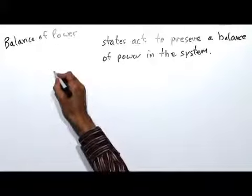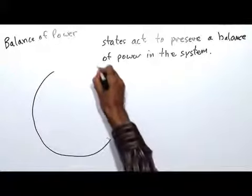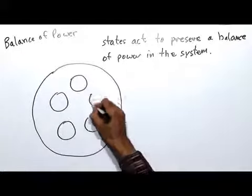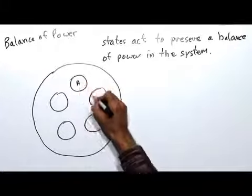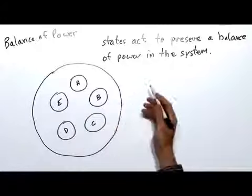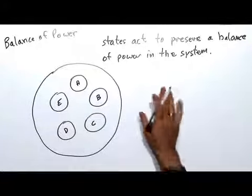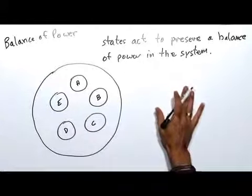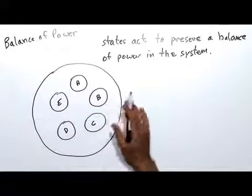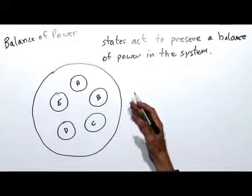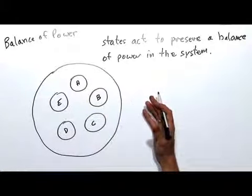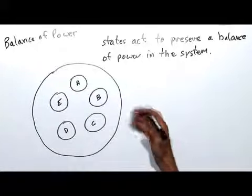What I'll do is draw an international system here, and I'm going to populate it with five states — A, B, C, D, and E — all roughly equivalent in power, hence their approximate identical size. The whole idea of balance of power behavior is that states act to preserve a balance of power in the system to prevent any one of these states from dominating all the others. In other words, if any of these countries is growing in power to the extent that it could dominate the entire system or even conquer all the other states, these other states will act to balance that power in an effort to achieve an equilibrium in the system.